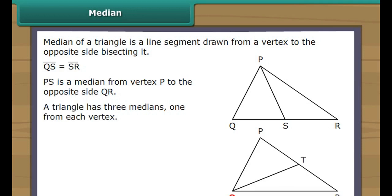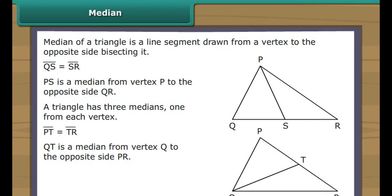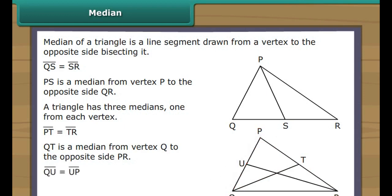Let us draw the remaining two medians. We draw a line segment from Q to cut PR into two equal halves at point T. Therefore QT is a median from vertex Q to the opposite side PR. We draw one more line segment from R to cut QP into two equal halves at point U. Therefore RU is a median from vertex R to the opposite side QP.